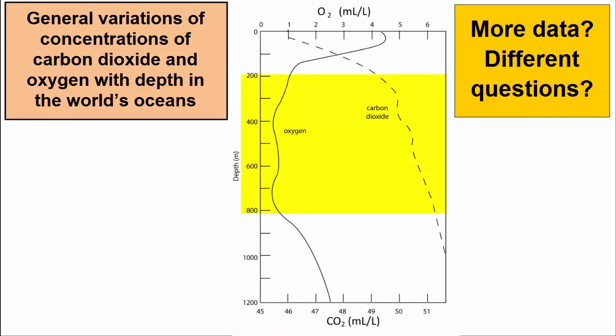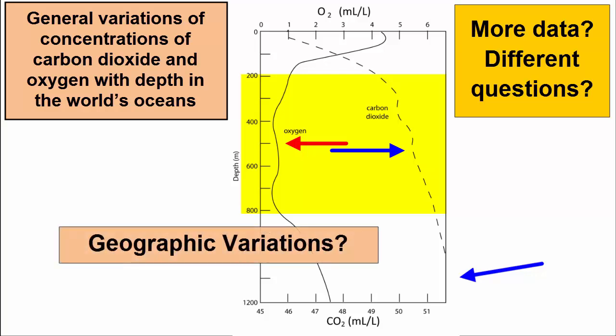In the graph, what's going on between 200 and 800 meters depth to oxygen? What process is at work there that seems to have such a big impact on oxygen, but not on carbon dioxide? And what happens at depths greater than 1,000 meters, where we no longer see any data? And what variations, if any, exist across latitudes and longitudes in the oceans?